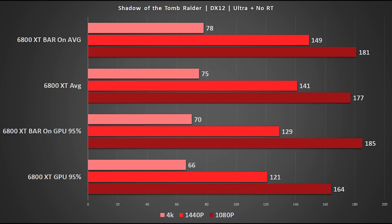Starting things out with Shadow of the Tomb Raider: 141 FPS goes to 149 in our 1440p results. We even gain a couple of FPS at 4K as well, which is arguably even more important since 4K is so demanding to run. Interestingly, our GPU 95th percentile stat from the built-in benchmark goes from 66 to 70, which again is quite a tangible benefit.